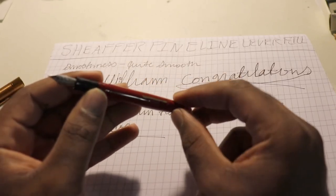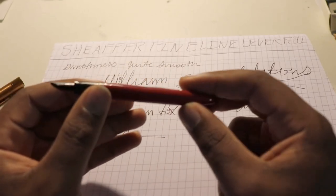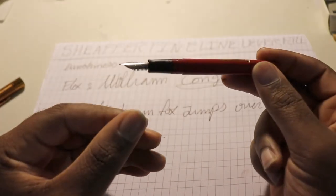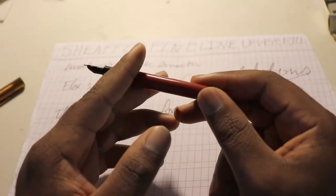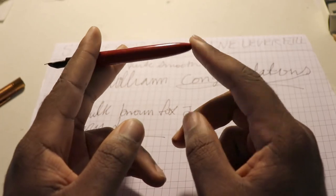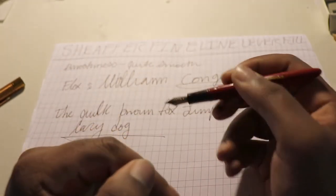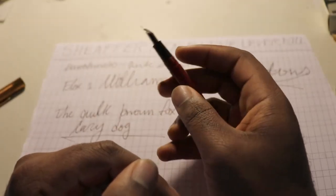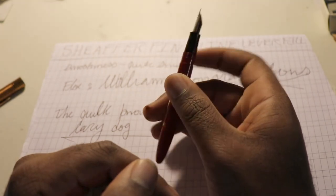And luckily the lever bar didn't need a replacement, because if you repair these lever pens, sometimes they need replacement. But anyways, I slapped this new sack on and filled it up. It's ready to go. It works perfectly fine now. I now have a working Schaefer Fine Line, which is cool.